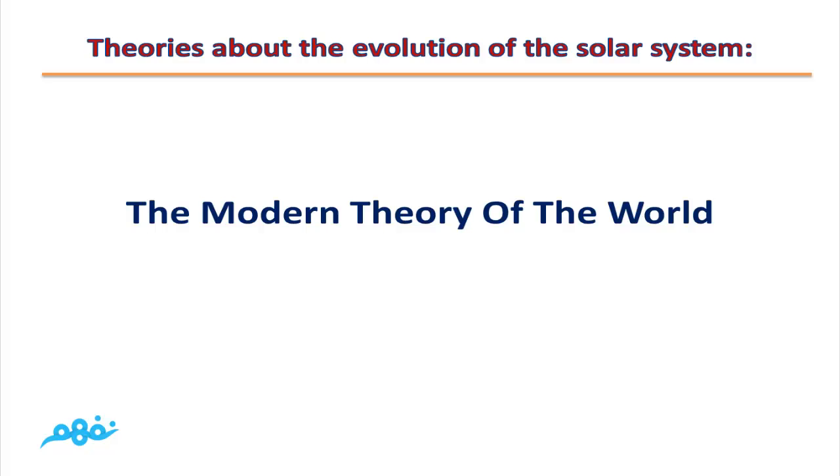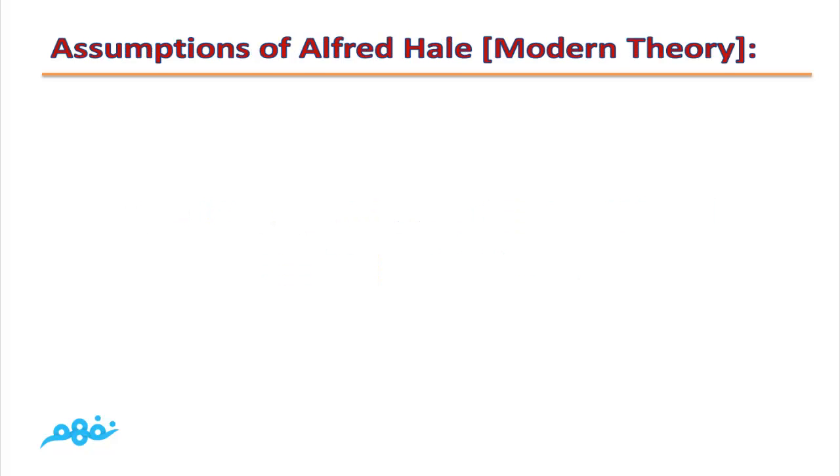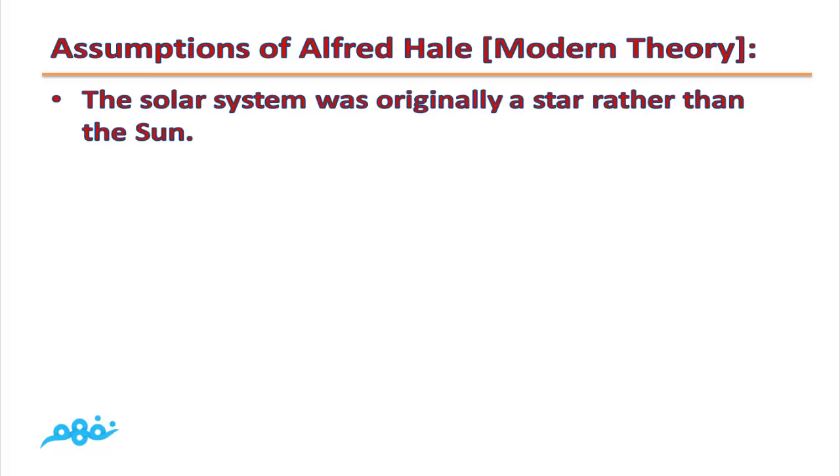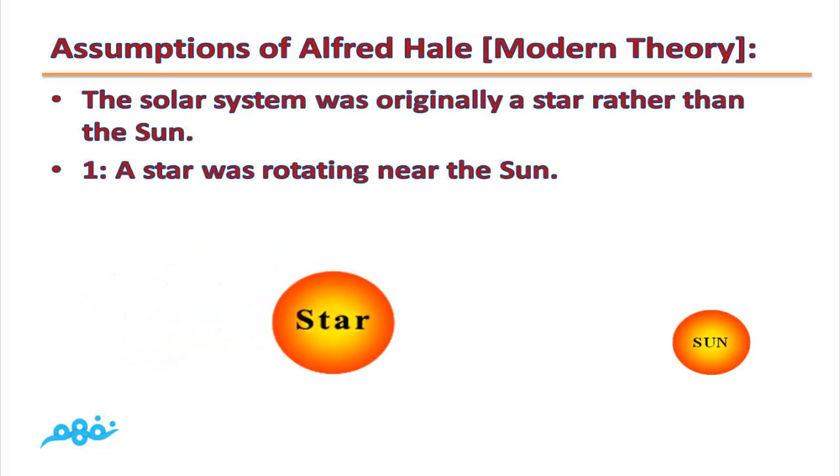The third theory is Modern Theory about the world, Alfred Hoyle, 1944. Assumptions of Alfred Hoyle theory: The solar system was originally a star rather than the sun. According to Alfred Hoyle theory, we have the sun and another star.